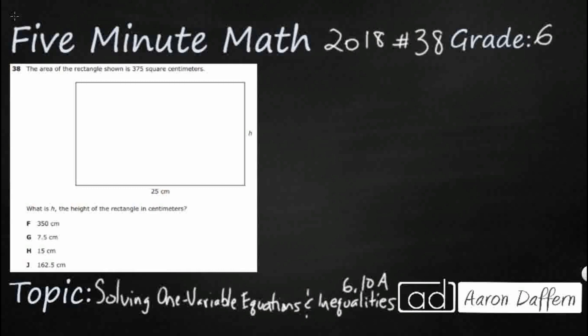So we have a very simple rectangle here. They've given us the base and they are asking us for the height. The only thing we need to know is that area equals base times height, and they've actually already given us the area. The area is 375 square centimeters.